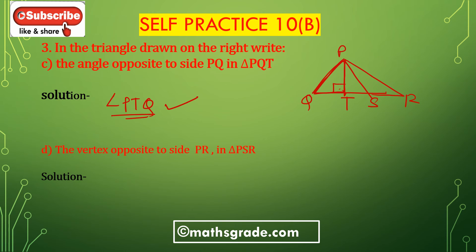Bit D: The vertex opposite to the side PR in triangle PSR. This is triangle PSR. The side PR is identified, and the vertex opposite to the side PR is S. The vertex is S.